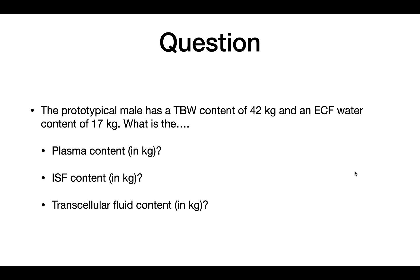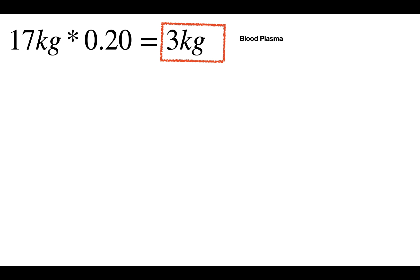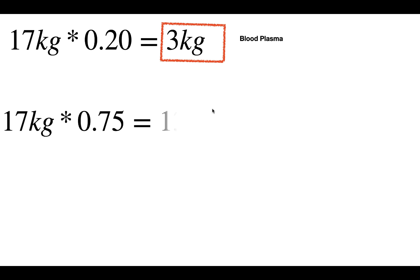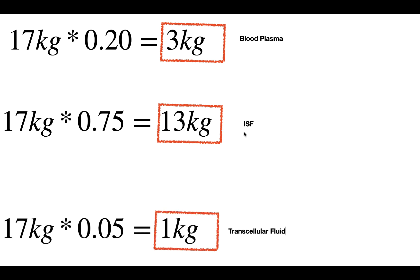Here's another question. We know the total body water for the prototypical male is 42 kilograms and the ECF water content is 17 kilograms. Calculate the plasma content, ISF content, and transcellular fluid content in kilograms. Blood plasma is 20% of the ECF: 17 × 0.2 = 3 kilograms. Interstitial fluid is 75% of the ECF: 13 kilograms. And transcellular fluid is 1 kilogram.